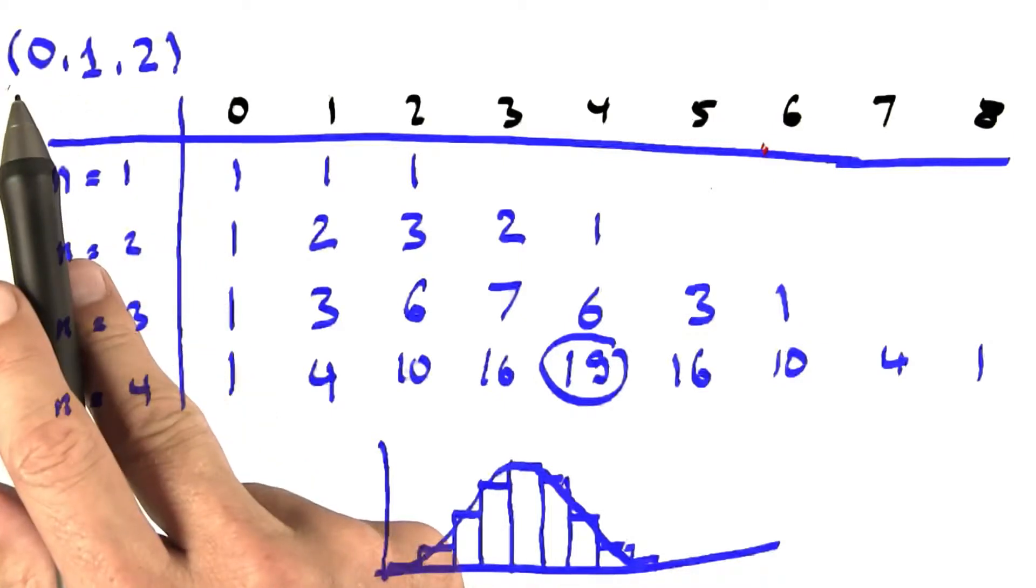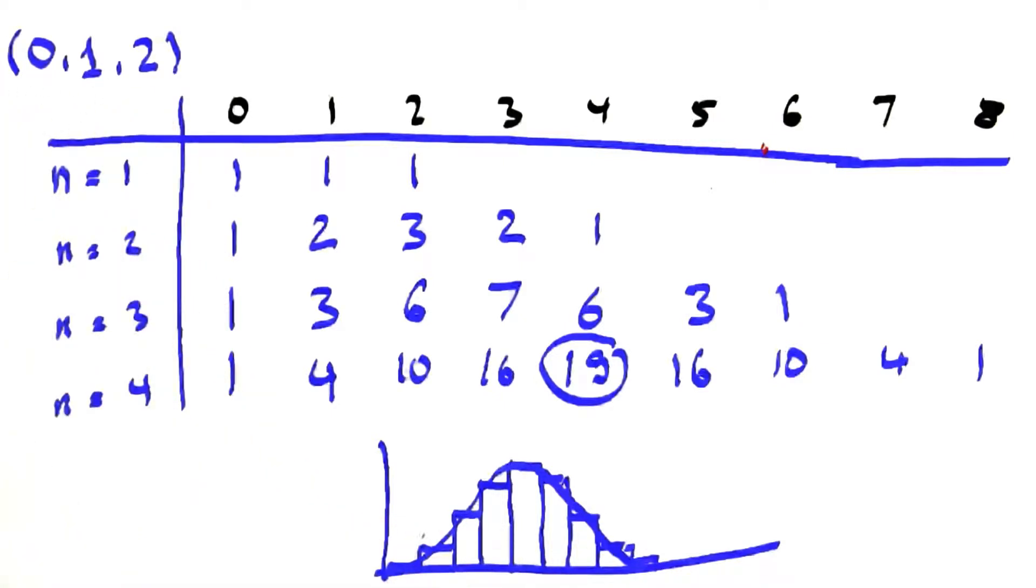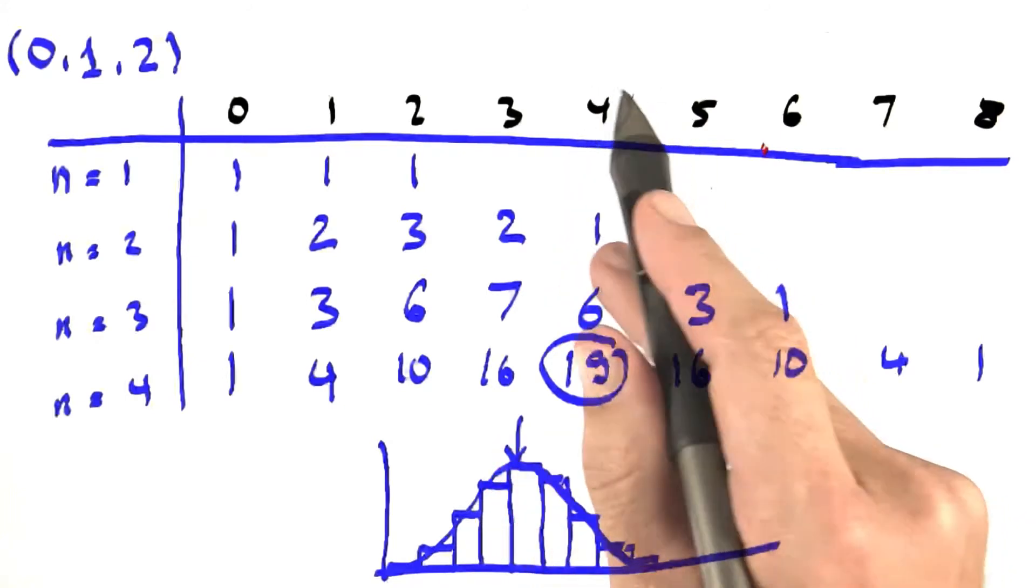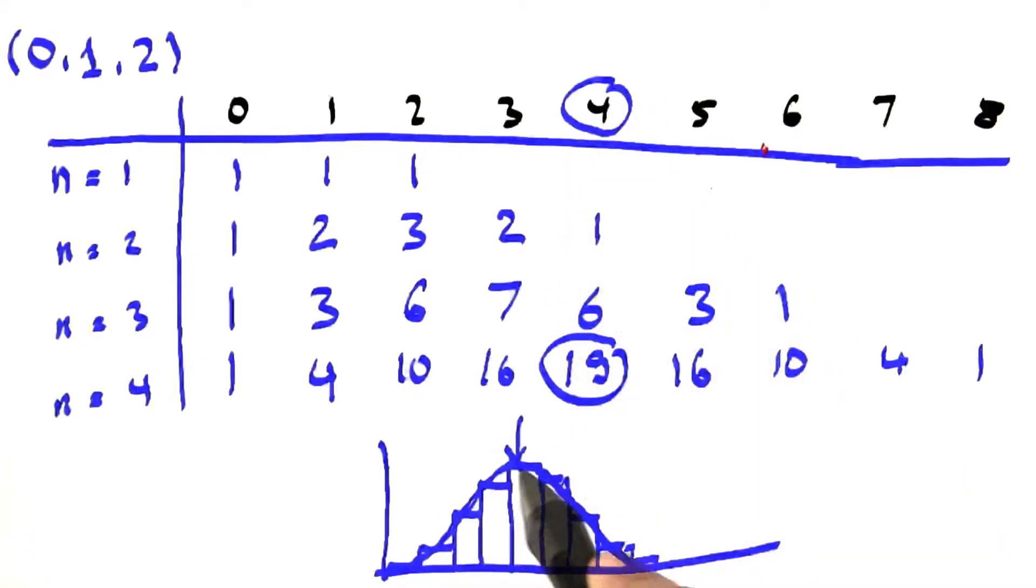So even for this different experiment with the dye, we get about the same phenomena that the sum of those seems to have a distinct high probability for what's the most likely outcome, 4, and then it falls off in some interesting way.